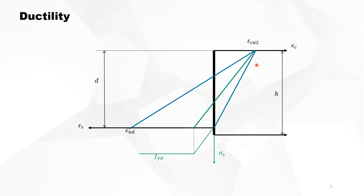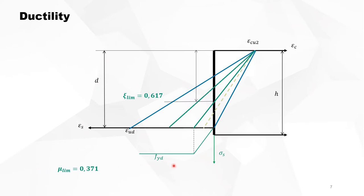Because of horizontal equilibrium, if you increase the compressive force the tension force must increase. If you have the same reinforcement then the stress must increase in the reinforcement, meaning this line moves this way. The depth of the neutral axis at this special line is 0.617 and the reduced bending moment is 0.371. So always for simple bending, your reduced bending moment must be smaller than 0.371. There is another line for rotation capacity, with a neutral axis depth of 0.45 and reduced bending moment of 0.296. This dotted line is a situation we should never have for simple bending.